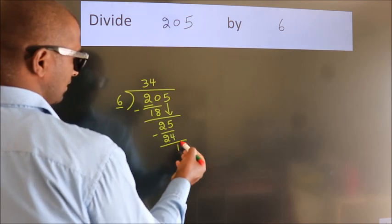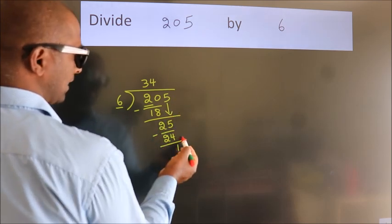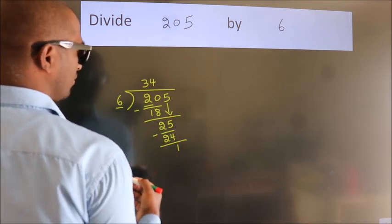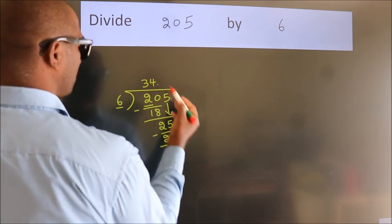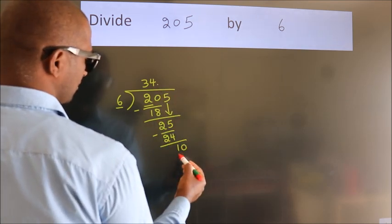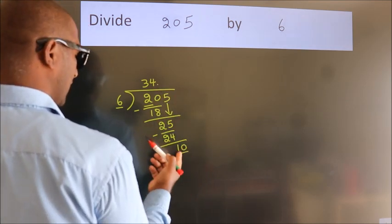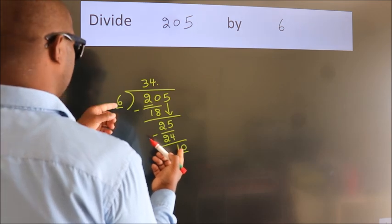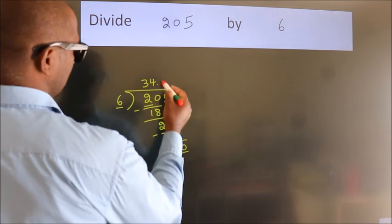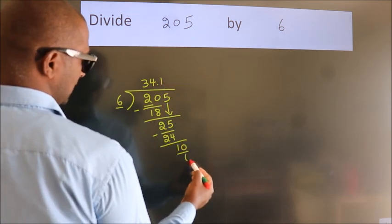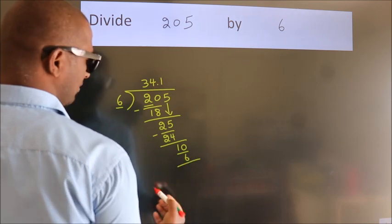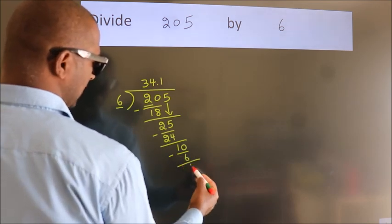After this, no more numbers to bring down. So what we do is put a dot and take 0. So, 10. A number close to 10 in the 6 table is 6 times 1, 6. Now we subtract. We get 4.